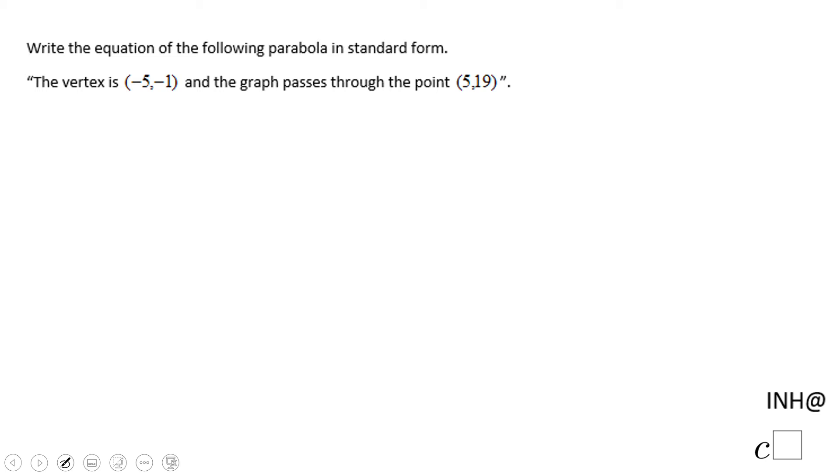Welcome or welcome back to INeedHelp at C Squared. In this example we have quadratics because we have a parabola. The vertex is (-5, -1) and the graph passes through (5, 19). We need to write the equation.